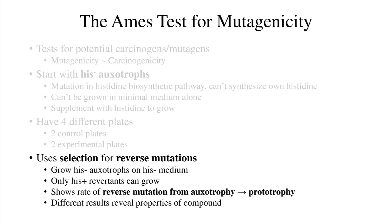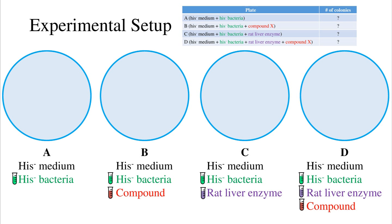Different results reveal properties of the compound. The experimental setup of the Ames test consists of four different plates. Plate A is a control plate with hist-minus bacteria — the auxotrophs — on hist-minus medium. This plate shows the spontaneous rate of reverse mutation.